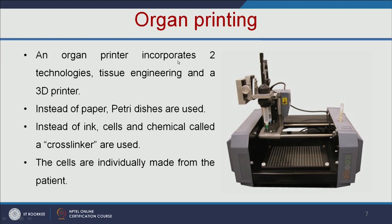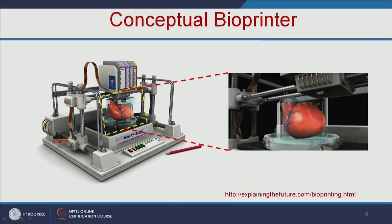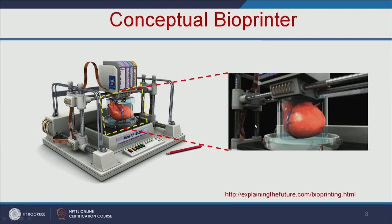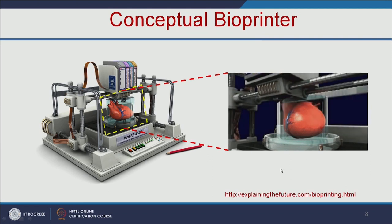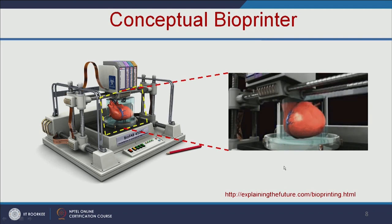Let us see what is an organ printer. It incorporates two technologies: tissue engineering and a 3D printer. It is similar to your normal printer, but instead of paper we use petri dishes, and instead of ink we use cells and a chemical called cross-linker. Here we take the cells from the patient's own body, so there will not be any immunorejection of the organ. In future, we may get this kind of bioprinter to make a customized organ for the patient's need.